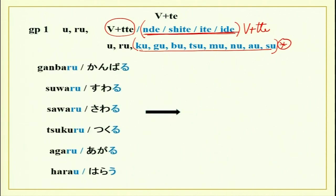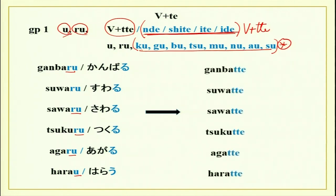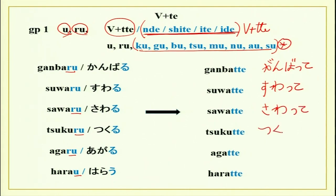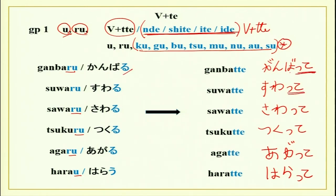Let us see Group 1 verbs in detail. All verbs ending in ru and u — for example gambaru (to work hard), suwaru (to sit), sawaru (to touch), tsukuru (to make), agaru (to go up), and harau (to pay). The te forms are: gambatte, suwatte, sawatte, tsukutte, agatte. You can see clearly that the ru ending changes to tte for all these ru-ending Group 1 verbs.